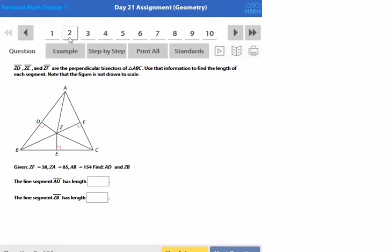These are some examples from day 21. In this problem, they tell us that segments ZD, ZE, and ZF are perpendicular bisectors of triangle ABC, which means that this point Z here would be the circumcenter, because that's where perpendicular bisectors meet up. Use this information to find the length of each segment.